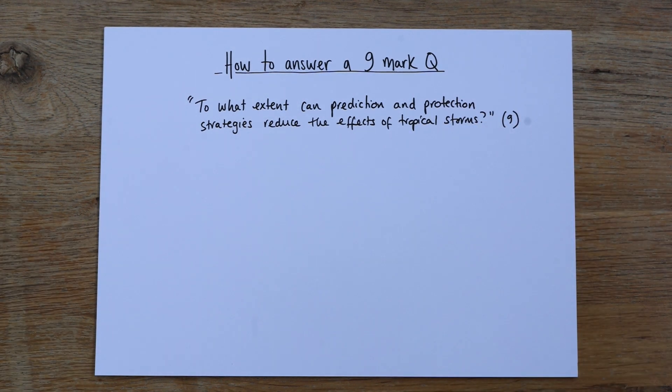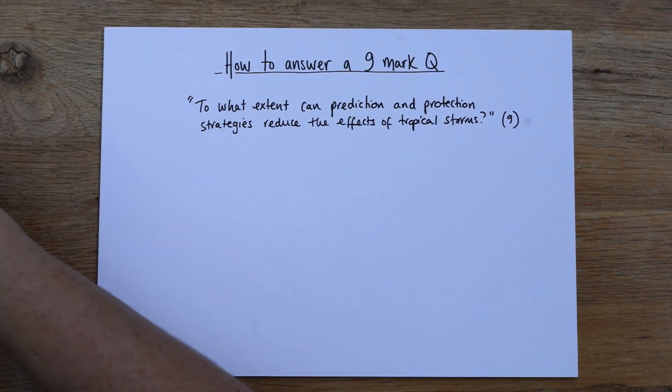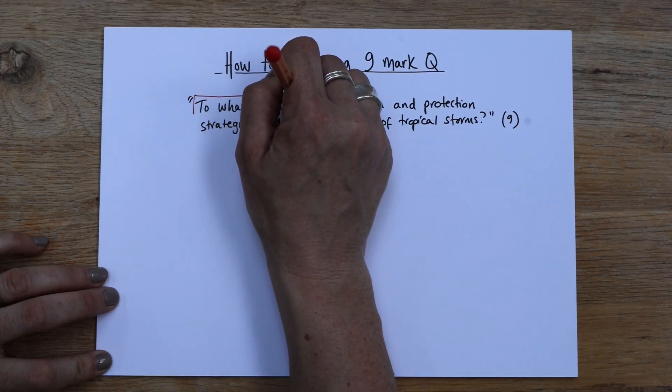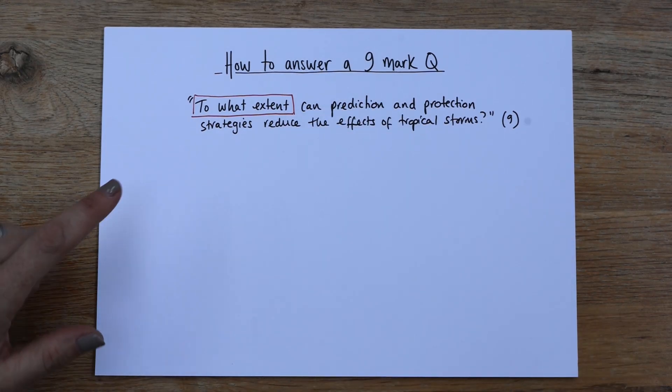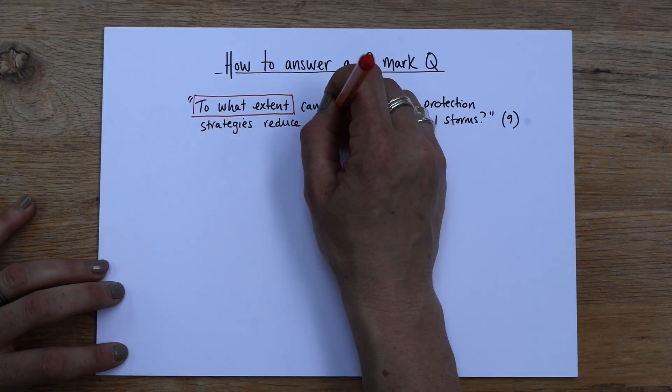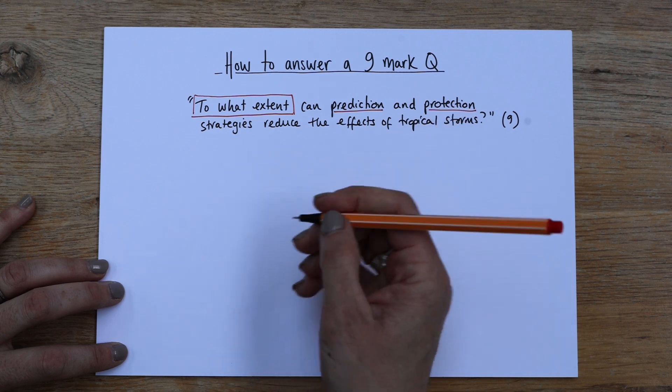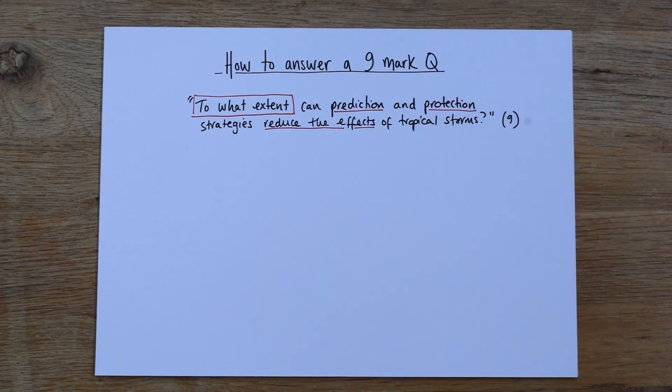Now I'm going to show you what I do in the classroom. This is what I teach all my students to do and it has really good results. So we're going to do something called bugging the question and that means we box the command word. I'm doing one in red so it really stands out for you. So we box the command word and then we underline the keywords. So I'm going to underline prediction, protection and reduce the effects. And it's a nine marker.